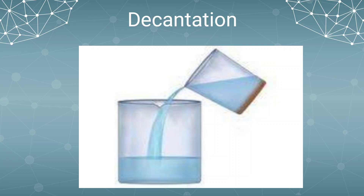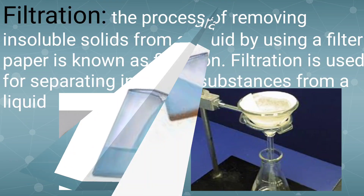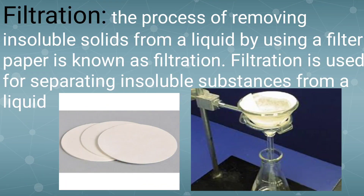Now let us see the filtration process. Filtration means using a strainer to separate the leaves from the tea. Filtration is the best method to separate tea from the leaves. One more example of filtration: fruit and vegetable juices are usually filtered before drinking to separate seeds and pulp, using this filtration process.